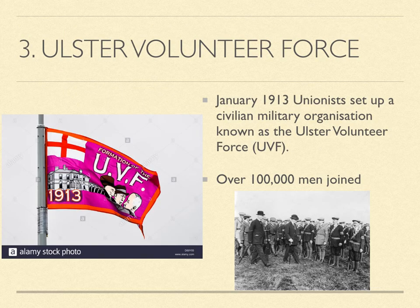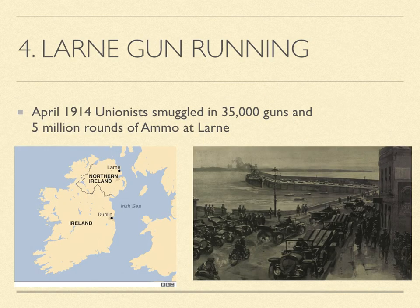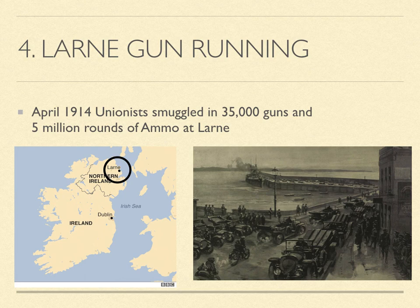The third thing the Unionists did was set up a military organisation called the Ulster Volunteer Force, or UVF, with over 100,000 men trained by former army officers, with the sole purpose of preventing Home Rule. Like any army, they needed guns, and on the 24th of April 1914 they smuggled in 35,000 guns and 5 million rounds of ammunition into the port of Larne in County Antrim. They distributed them around Northern Ireland with military precision, with some help from the local police. This is known as the Larne gun running.